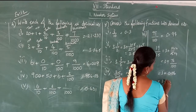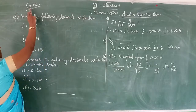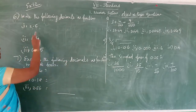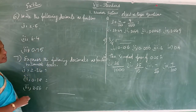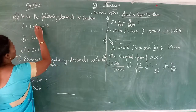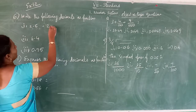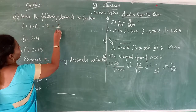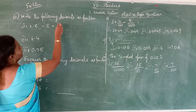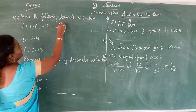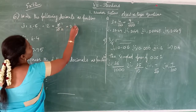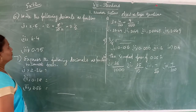Now Exercise 1.2, sixth question: write the following decimals as fractions. The decimal has a whole part written as it is. The decimal part — only one decimal place — so write 5 by 10. Cancel with the 2 times table: this simplifies to 1/2. So the answer is 2 and 1/2.